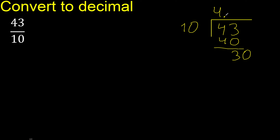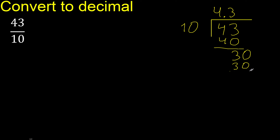Place the decimal point only once. 10 multiplied by which number? Multiplied by 3 is exact — 30. Subtract 0. Therefore, finish.